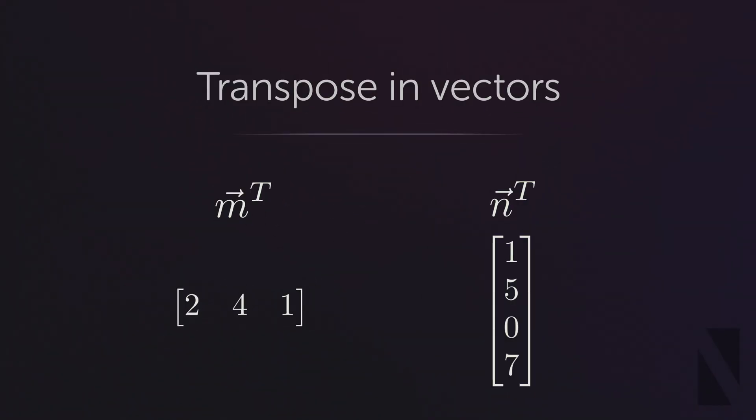But a simple question arises: what happens if I calculate the transpose of a vector two times? As you guess, if I transpose the transpose of my vector it simply becomes back to what it was before.